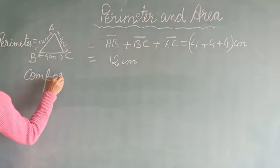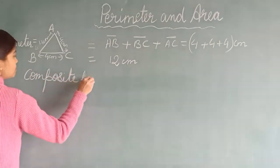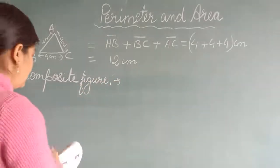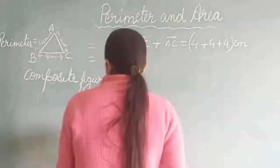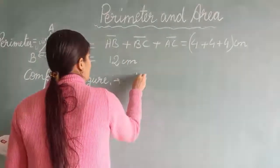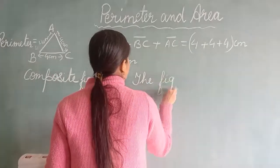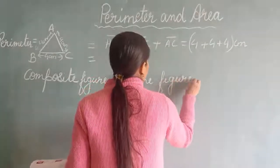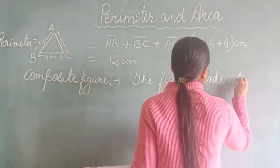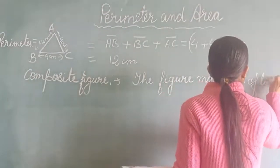What is a composite figure? A figure that is made up of two or more plain figures is called a composite figure.